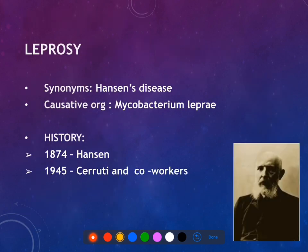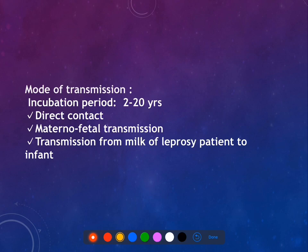The second granulomatous infection is leprosy, also called Hansen's disease, named after Hansen. The causative organism is Mycobacterium leprae. The mode of transmission may be through direct contact, materno-fetal transmission, or even transmission through the milk of a leprosy patient.